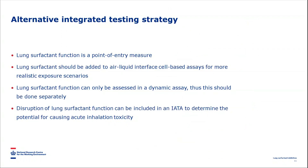In an alternative integrated testing strategy, lung surfactant function serves as a point-of-entry measure. Lung surfactant should be added to air-liquid interface cell-based assays for more realistic exposure scenarios, because the first barrier any inhaled particle encounters is lung surfactant — any particle will be coated with lung surfactant before it meets any lung cells. Since lung surfactant function can only be assessed in a dynamic assay, this should be done separately, but disruption of lung surfactant function can be included in an IETS to determine the potential for causing acute inhalation toxicity.